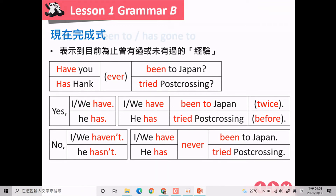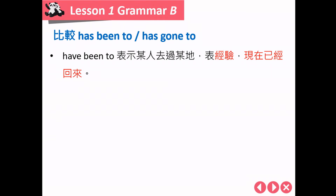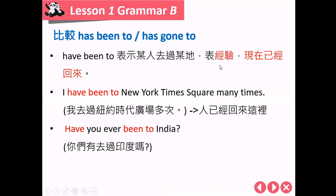接下来我们要讨论 have been to 跟 have gone to 的区别。第一个，have been to，这个片语是拿来表示这个人去了某某地方，而且去了之后人又回来了，所以去了这个地方成为他的经验。例句：I have been to New York Times Square many times，这个人现在人已经回来了，多次去过的经历成为经验值。Have you ever been to India？这句话是指这个人现在跟你在同一个地方，你只是在问他有没有去过印度的经验。